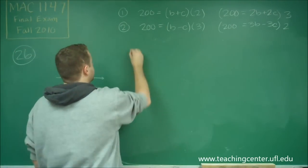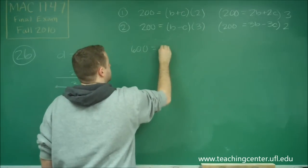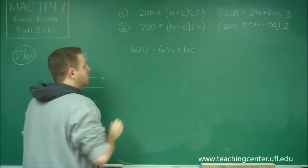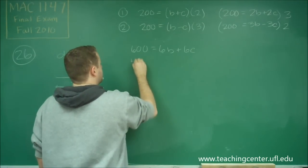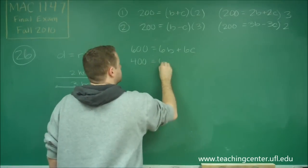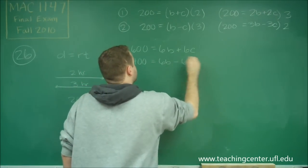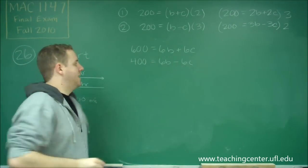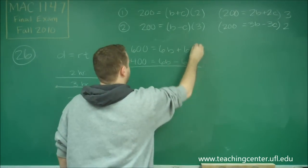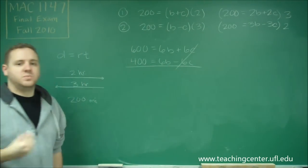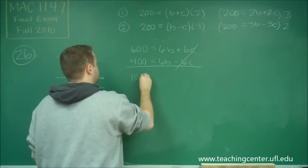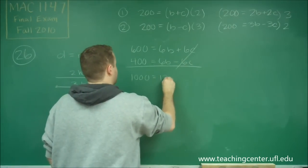So what we'll get then is 600 equals 6B plus 6C. And on the second equation, we'll get 400 equals 6B minus 6C. And now we can just add both equations together, and that will get rid of our C's, and we can solve for B. So if we add these together, we're going to get 1,000 equals 12B.